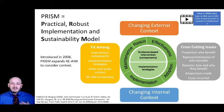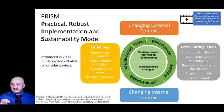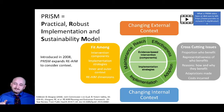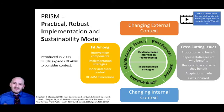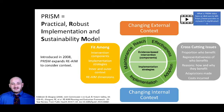PRISM stands for the Practical Robust Implementation Sustainability Model, and it really starts in the center of that circle with the evidence-based intervention components and the implementation strategies, because those are the core parts of what you're trying to do. You have your intervention that you know is effective and you have to have your strategies to implement them. Surrounding that circle are the RE-AIM outcomes: reach, effectiveness, adoption, implementation, and maintenance. When you expand past that circle, starting at the top with the changing external context, that's where part of PRISM comes to fit in.